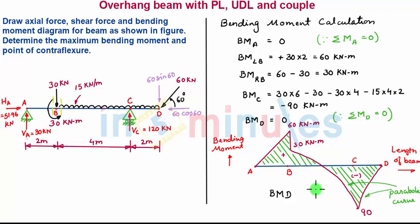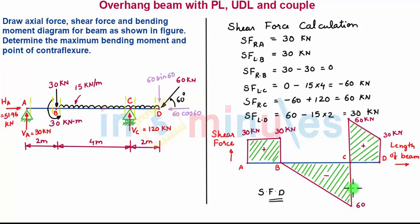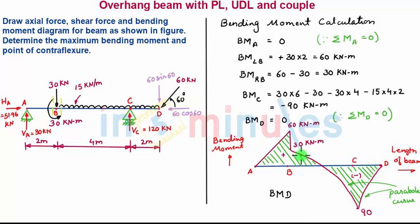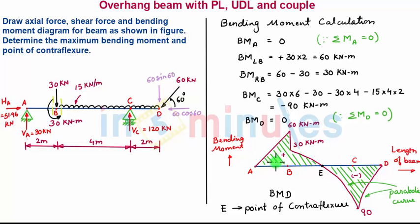Now we make some analysis of the bending moment diagram. We can see that the positive maximum bending moment is at point B with a value of 60 kNm. Also at point C the shear force is changing its sign from negative to positive, so the negative maximum bending moment is at point C. The bending moment is also changing its sign from positive to negative at some intermediate point — let that point be defined as point E. Point E is called the point of contra flexure, which is the point at which the bending moment is 0 or changes its sign.